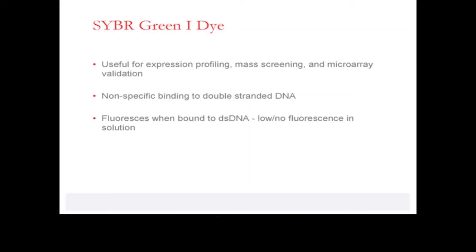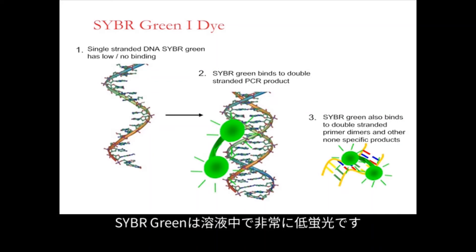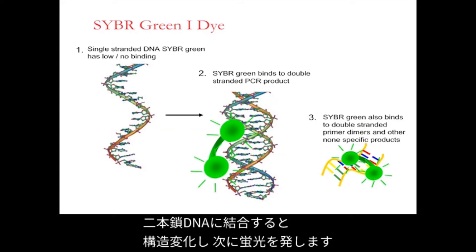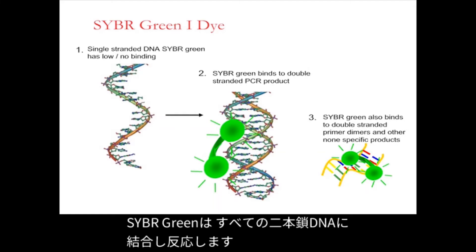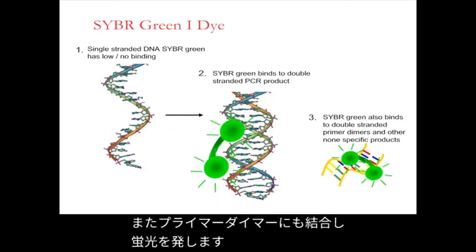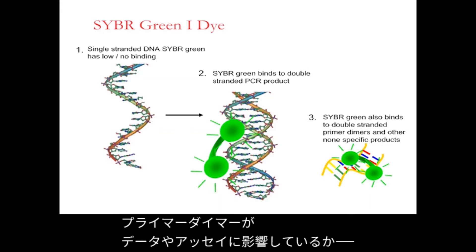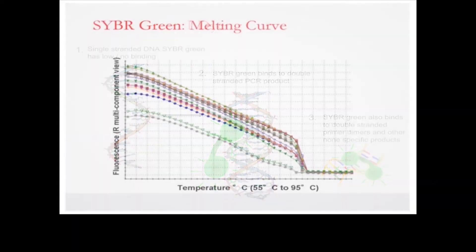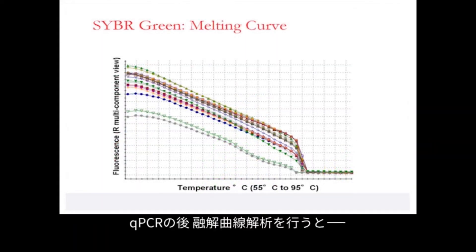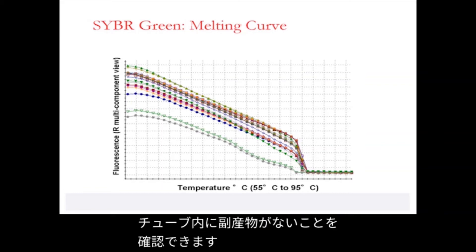In solution, SYBR Green 1 has very low fluorescence. When the dye binds to double-stranded DNA, it undergoes a conformational change and subsequently fluoresces. SYBR Green 1 is non-specific and binds to all double-stranded DNA in the reaction tube. It will also detect the presence of primer dimers and fluoresce. Therefore, the fluorescence signal detected is much higher with the addition of primer dimers. But you can always identify if primer dimers are affecting your assay by doing a melt curve analysis after qPCR to ensure there are no secondary products in the reaction tube.